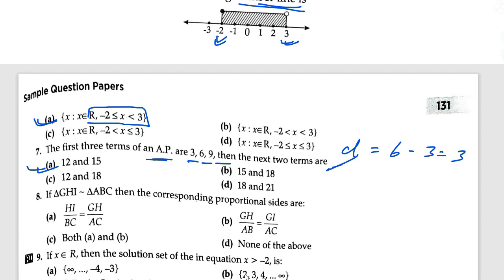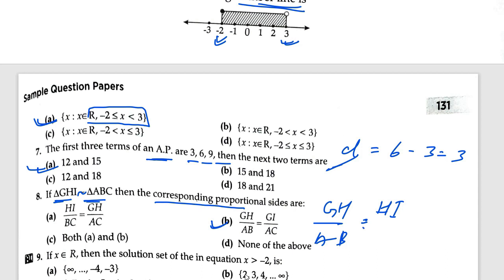Question number 8: if triangle GHI is similar to triangle ABC, the correct answer is B because of corresponding proportional sides. GH over AB equals HI over BC equals GI over AC — this is the corresponding proportional relationship.